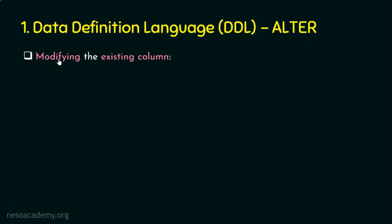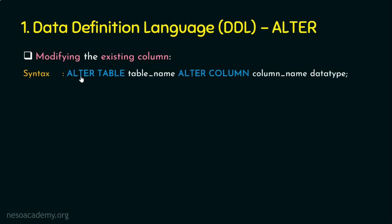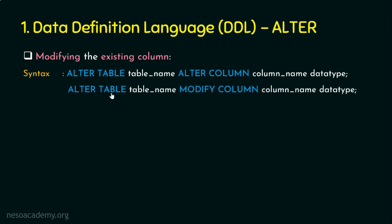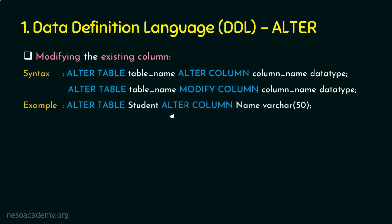Now let's see the second scenario: modifying an existing column. The syntax is: ALTER TABLE table_name ALTER COLUMN column_name new_data_type. Note that different databases handle this differently — Microsoft SQL Server, Sybase, Informix, IBM DB2, and others may vary slightly. If this command doesn't work, try: ALTER TABLE table_name MODIFY COLUMN column_name data_type. Please apply due diligence to find which keywords differ per software.